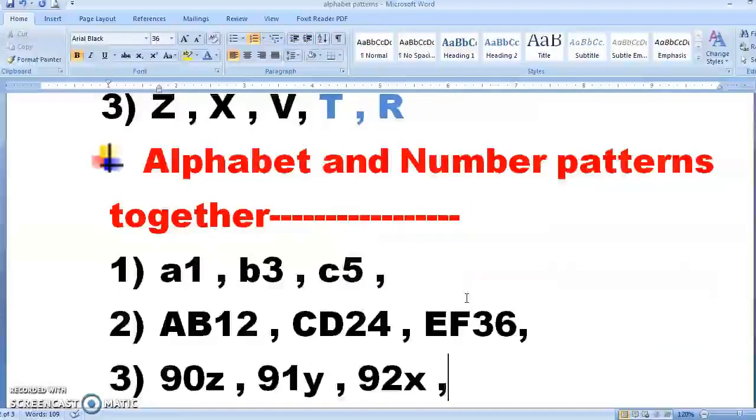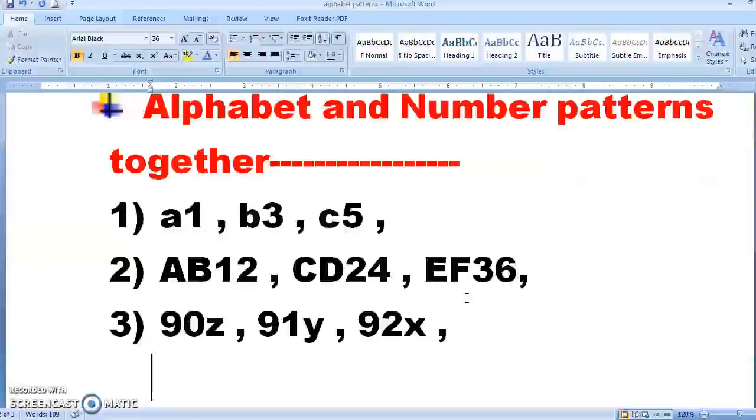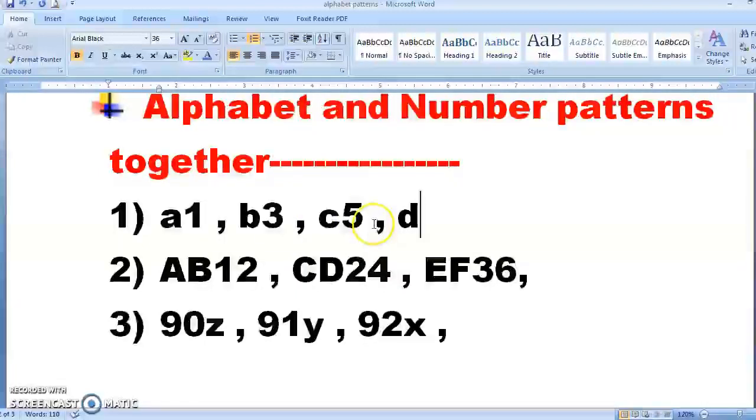Now let us see a few examples of combinations of alphabet and numbers together. So very easy. You can see, first see the alphabets. A, B, C. So what will be the next alphabet? D. Now look at the number. One. Then two is not there. Three. Then four is not there. Five. So which number I am not going to write? Six. And then I am going to write seven. Or you can say, I am adding two. So seven plus two is nine. And after D what I will write? E. E nine.